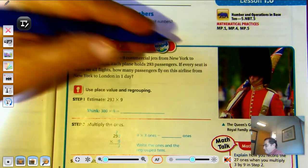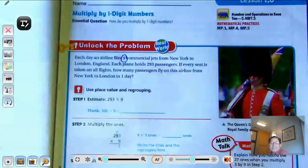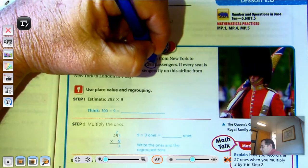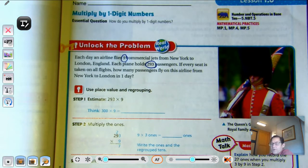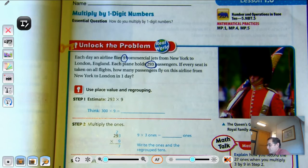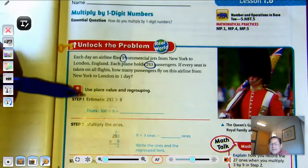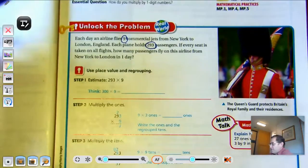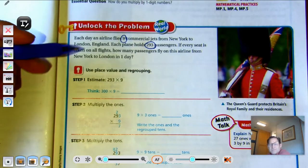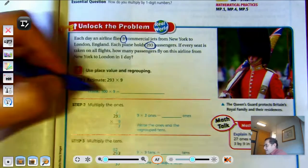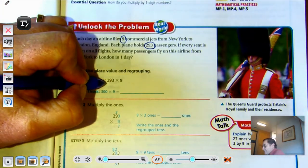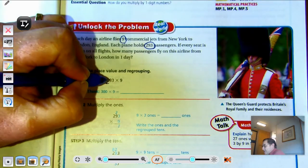So we have nine jets, and each one holds 293 passengers. So we're going to use place value and regrouping to solve this problem. So first, let's start with an estimate, because our product should be close to our estimate so we know that our answer is reasonable.